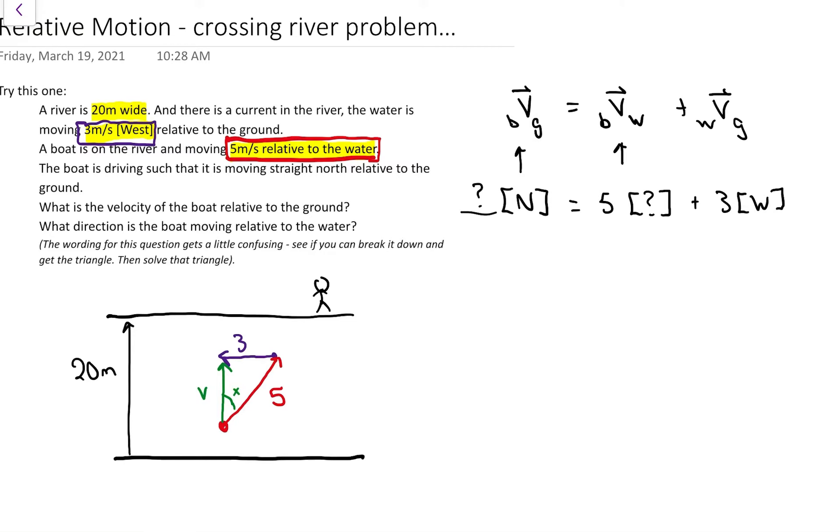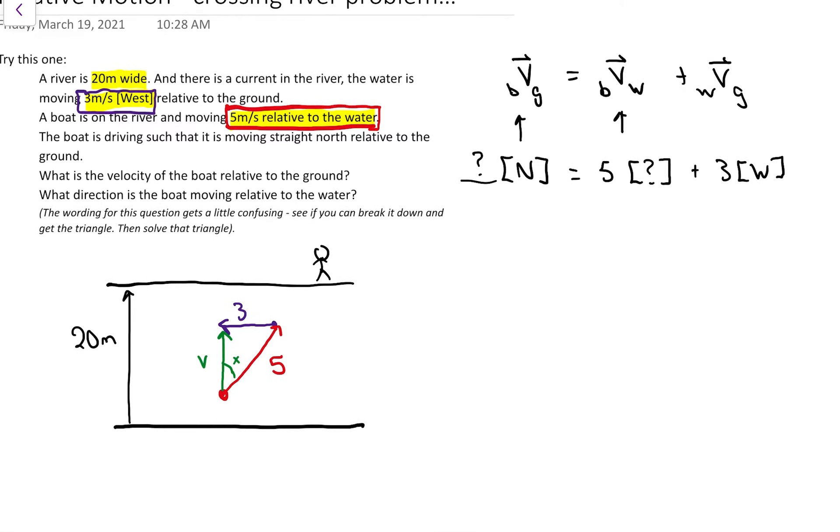Once we sort of break it down and figure it out, that's what the colorful triangle there, that's what the triangle turns into. Notice that the displacement, the 20 meters, doesn't show up on that triangle. It stays off to the side. It's not a velocity. It's a displacement. So it doesn't interact directly with the triangle.